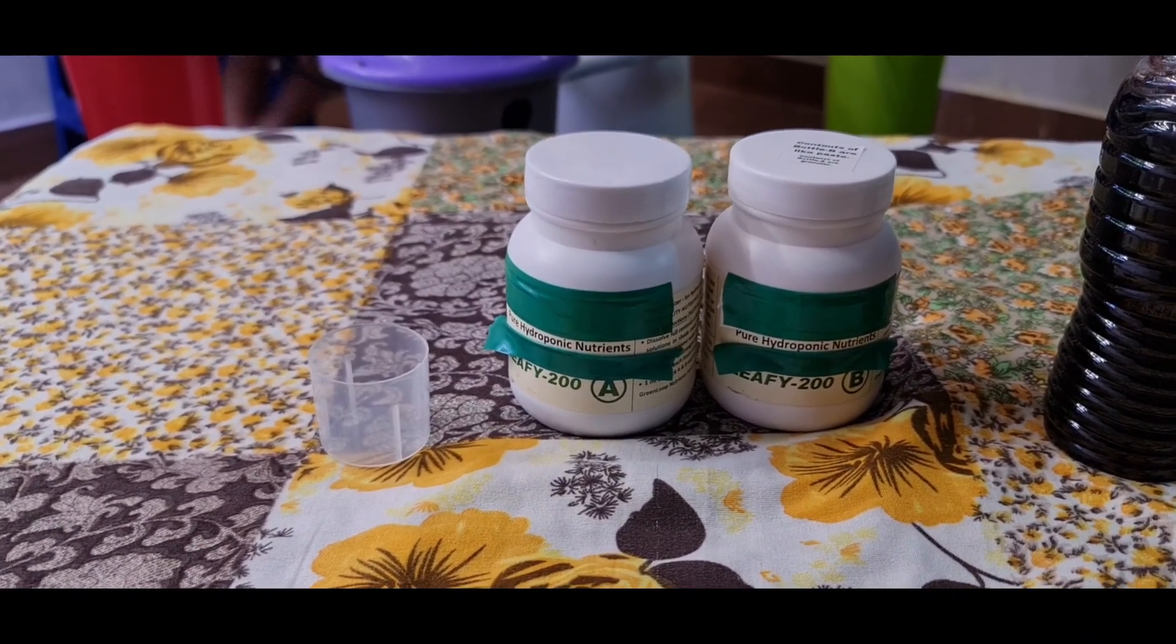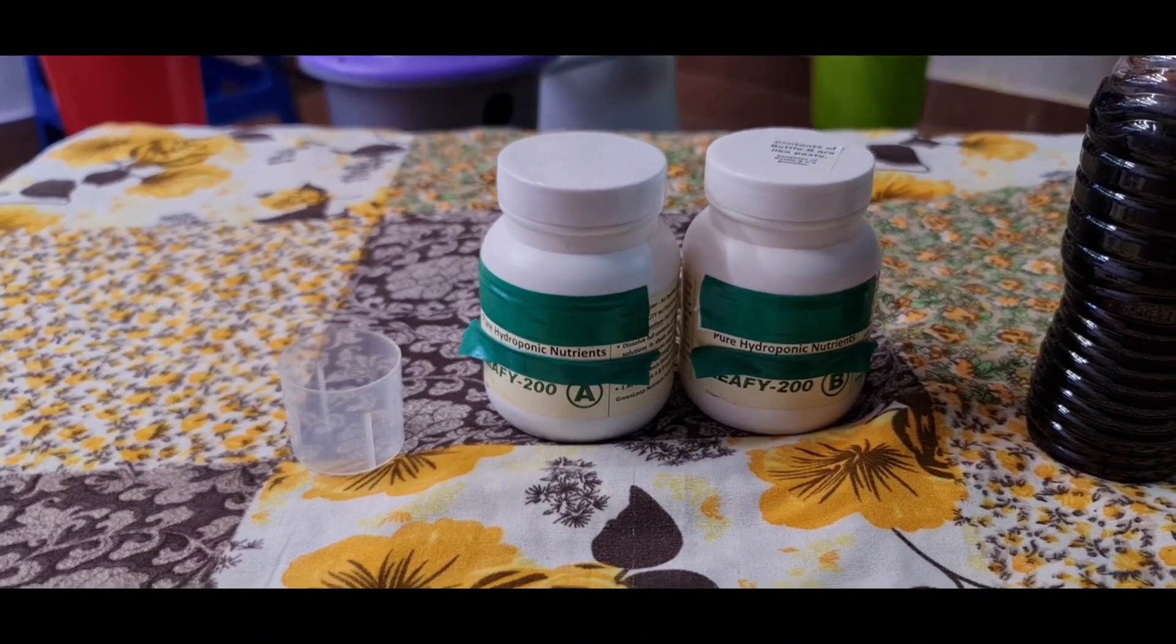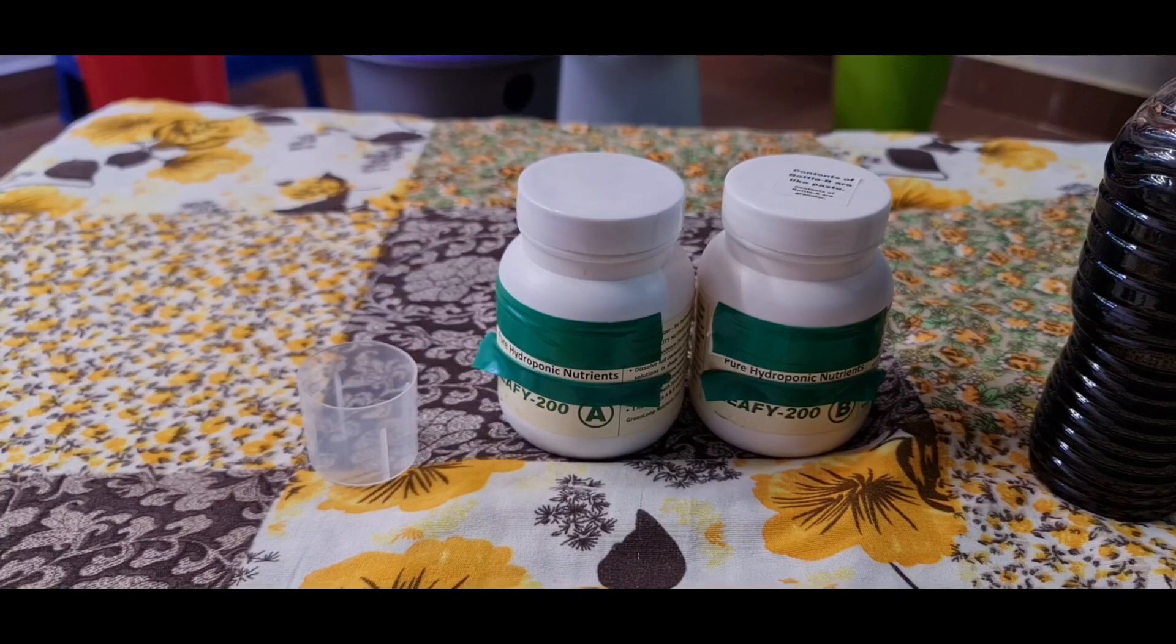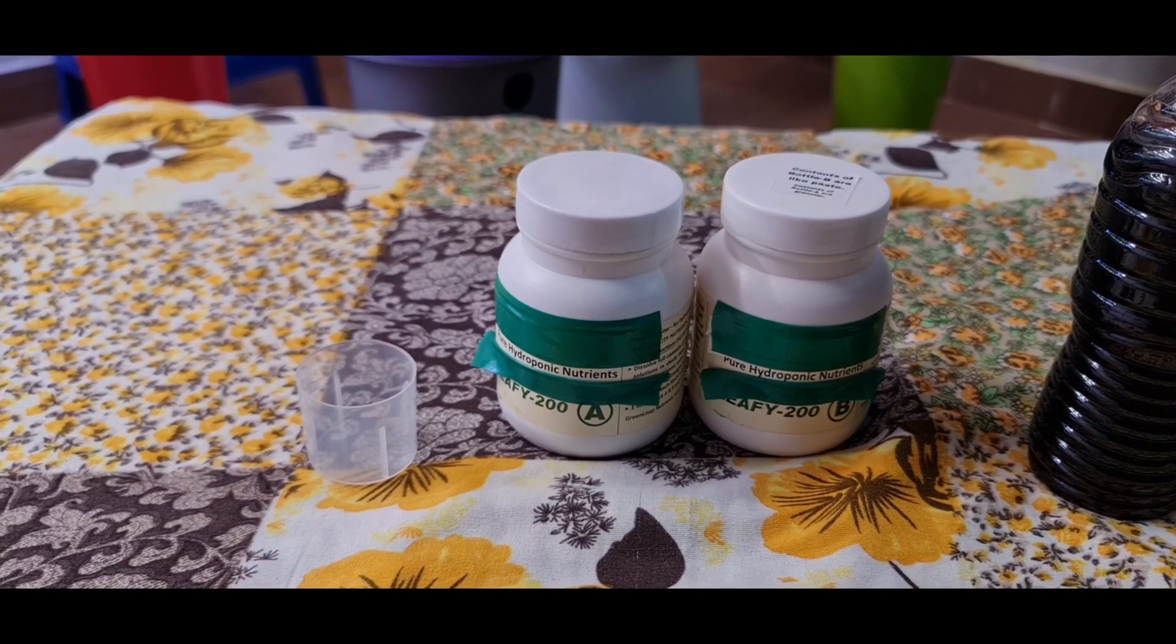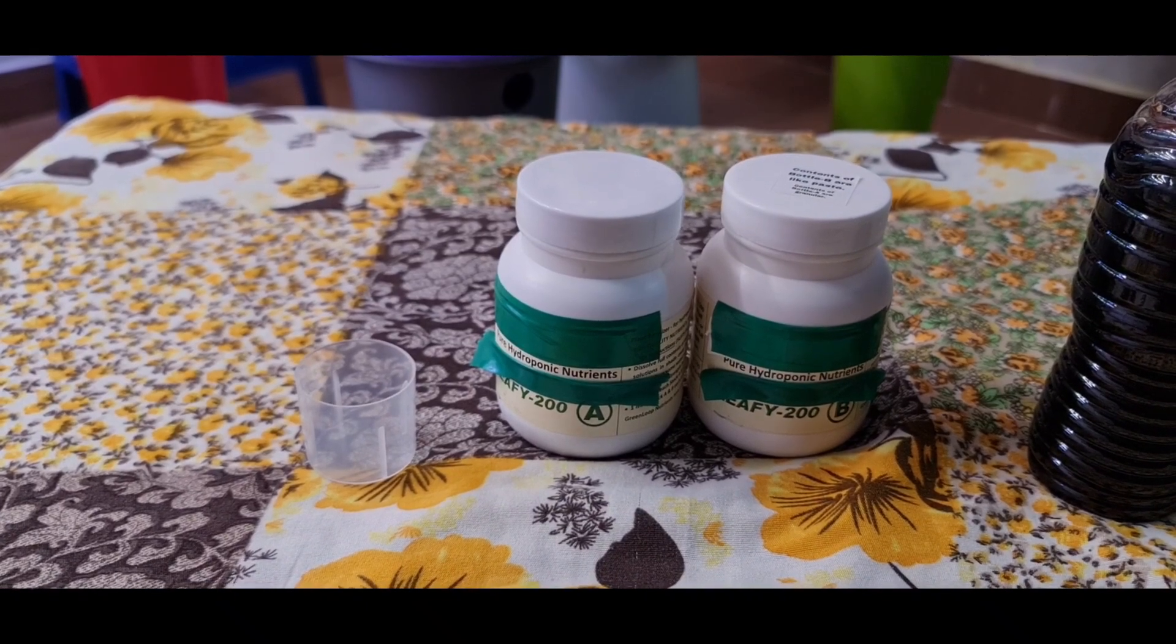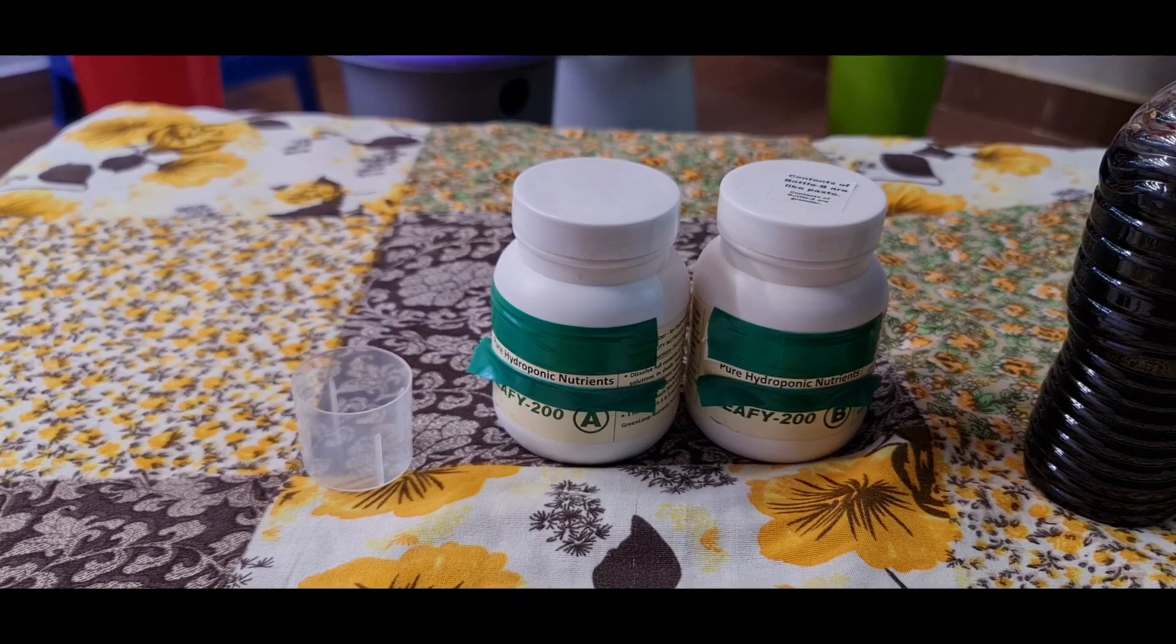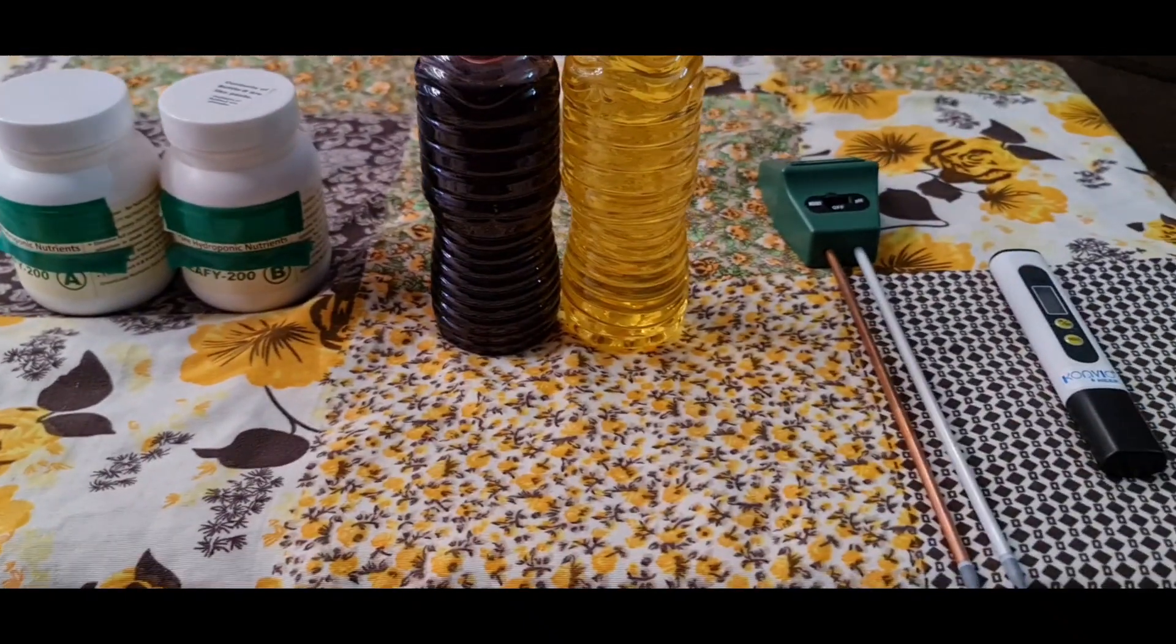Typically, this comes in bottle A and B. Stock solution is made using powder. Each powder A and powder B should be mixed in 1000 ml of RO water, 1 liter of RO water each, to make this stock solution.